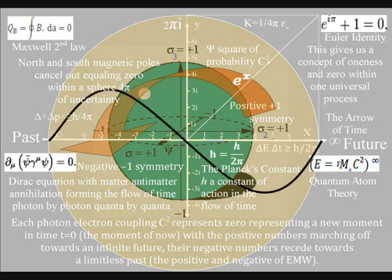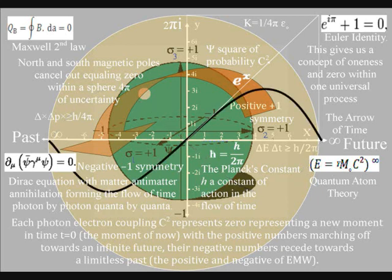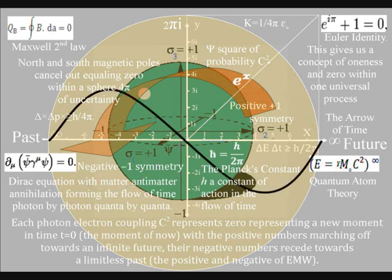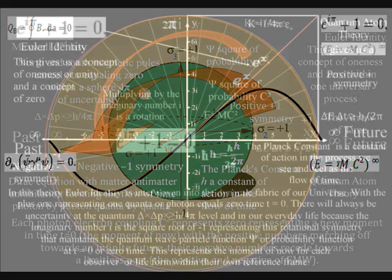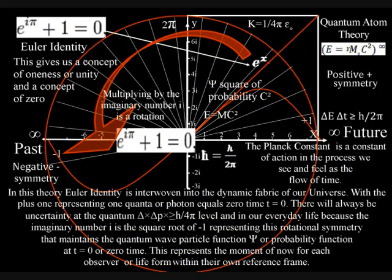In the top right-hand corner of this diagram, we have Euler's identity, the most beautiful equation to come out of the mind of man. But this beautiful equation has no meaning or purpose in modern physics. But in this theory, Euler's identity is interwoven into the dynamic fabric of our universe, with the plus one representing one quantum, or photon, equals zero time, t equals zero, the moment of now.